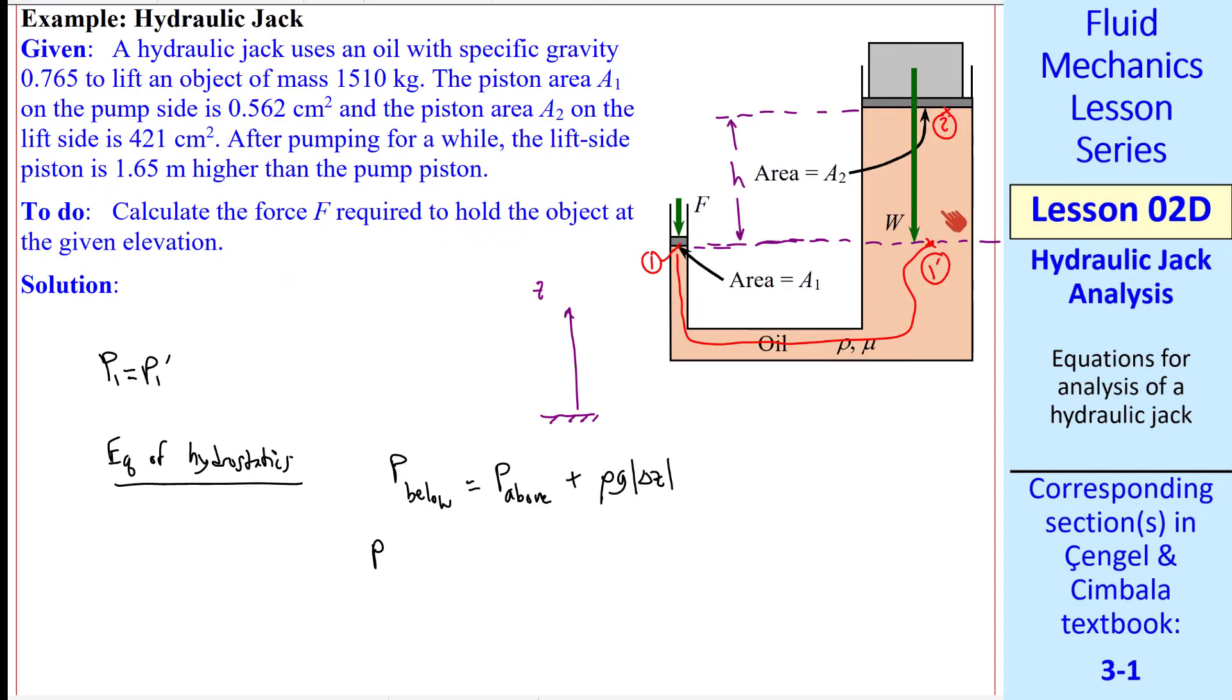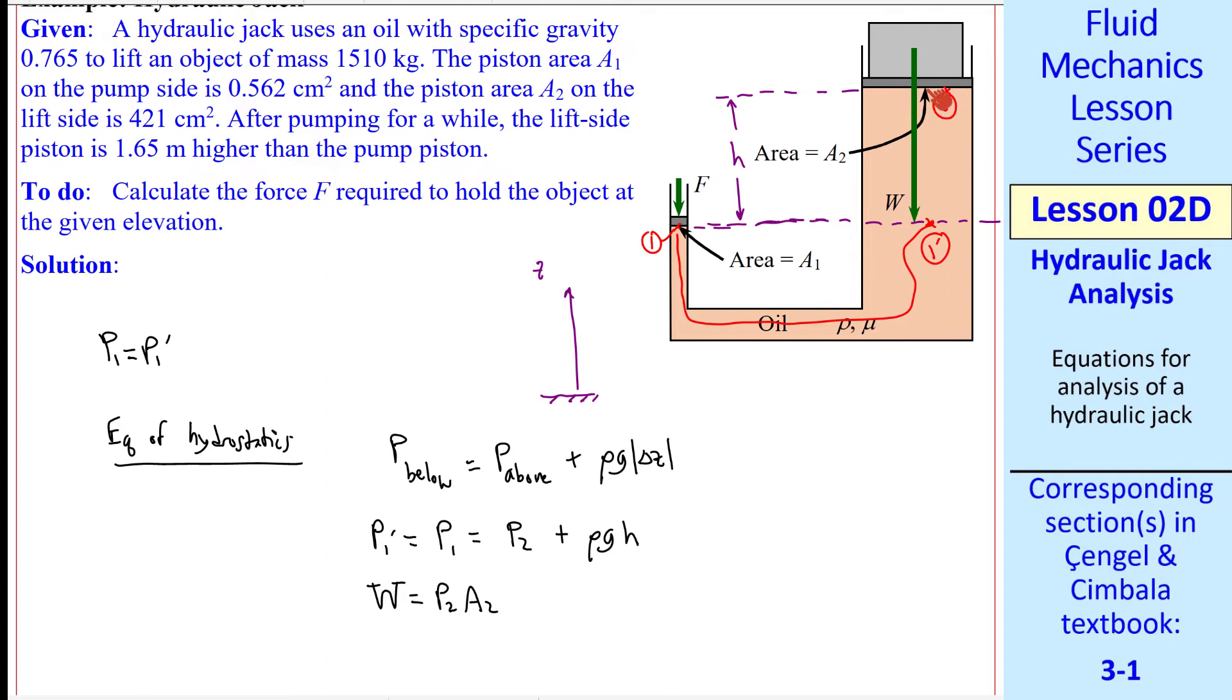Now we apply our equation of hydrostatics. P below equal P above plus rho G absolute value of delta Z. Applying this between 1 prime and 2, P1 equal P1 prime, which is equal to P2 plus rho GH. The height difference between 1 prime and 2, or 1 and 2.